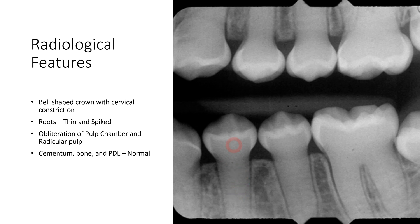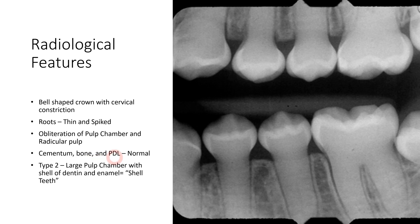Cementum, bone, and the PDL space appear normal — dentinogenesis imperfecta does not affect these structures. In some Type 2 cases, there can be a large pulp chamber with only a slight shell of dentine and enamel; these teeth are called shell-like teeth. These are the radiological features that help in diagnosis of dentinogenesis imperfecta.